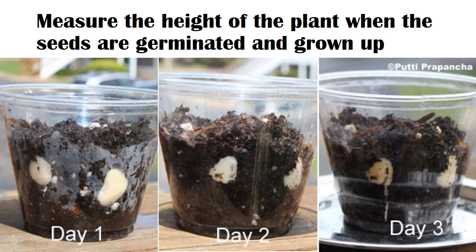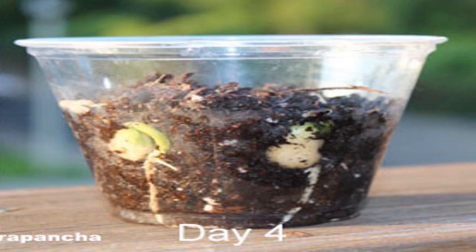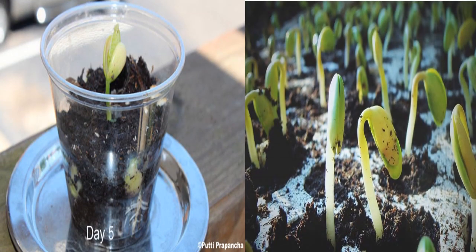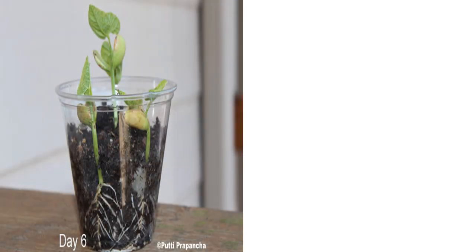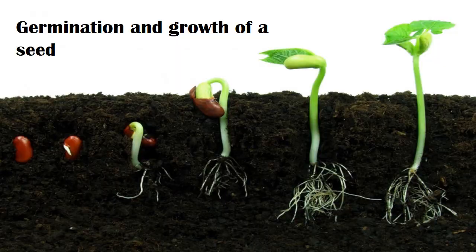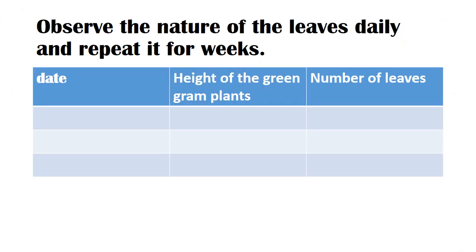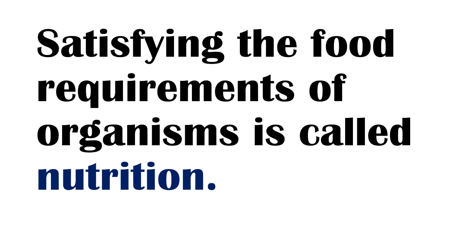Make some holes in the bottom of the yogurt cups. When the seeds germinate and grow up to a certain height, start measuring the height of the plants and observe the nature of the leaves daily. You can see on the first day, second day, third, fourth, and fifth day the sprouts have come up from the soil, and on the sixth day some leaves appear. Observe the nature of the leaves daily and repeat for two weeks with the help of your teacher. Record the date, height of the green gram plants, and number of leaves.